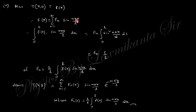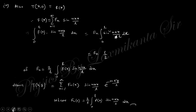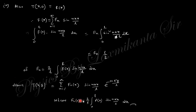Multiply both sides by sin(mπx/L) and integrate from 0 to L. The orthogonality of sine functions eliminates the summation on the right-hand side, giving L/2 times F_n. The left-hand side integral of f(x)·sin(nπx/L) dx from 0 to L can be evaluated once f(x) is given. This gives F_n equals (2/L) times the integral. This is the general solution — once f(x) is specified, F_n can be found.